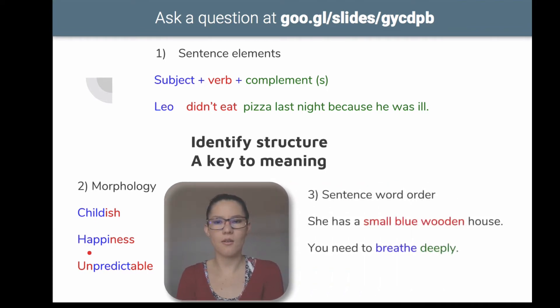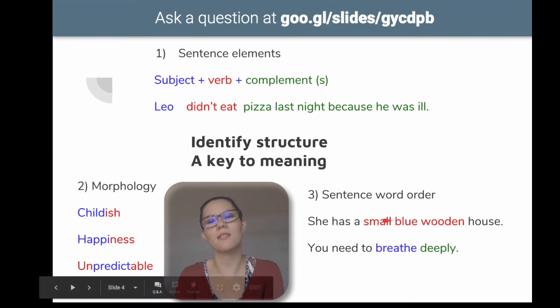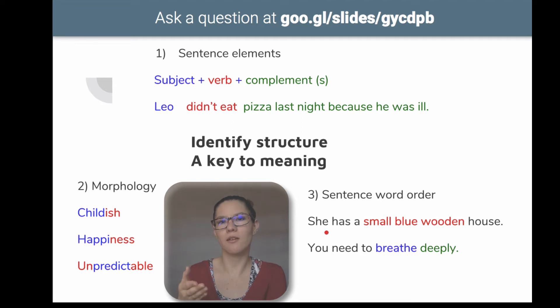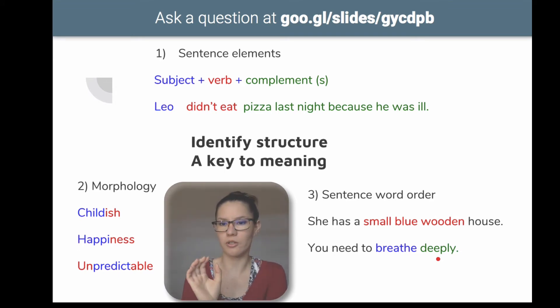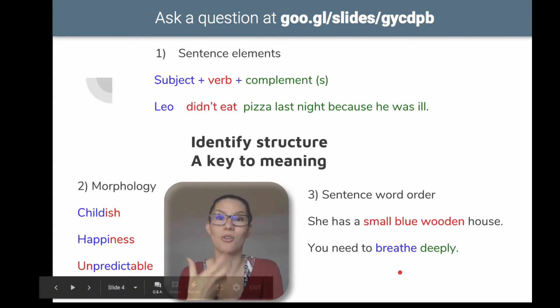And then, something really important is to understand sentence word order. For instance, we have this sentence, she has a small blue wooden house. Small, blue, and wooden are adjectives, but depending on what they're describing, they will have a different order within a sentence. And then, if you have this other example, you need to breathe deeply. Well, because of the ending ly, you can identify deeply as an adverb, but also because of the word order, because usually adverbs of manner are located after verbs, to let you know how you need to do something.